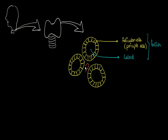In between these follicular cells there are blood vessels — the thyroid gland has a very rich blood supply. Other than the blood vessels, there are also cells present between or around the follicles, and they are called the parafollicular cells.